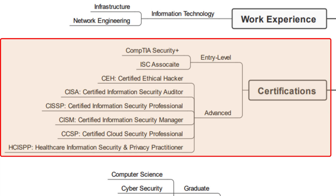The more advanced certifications I have listed here are the CEH — Certified Ethical Hacker — the CISA, which is the Certified Information Security Auditor, the CISSP — Certified Information Security Professional — the CISM, the Certified Information Security Manager, the CCSP — Certified Cloud Security Professional — and the HCISPP, the Healthcare Information Security and Privacy Practitioner. These are certifications that go in different directions and can open up different paths in information security, so you want to take a look and see which ones fit best with where you want to go.